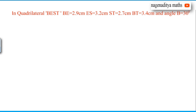The name of the quadrilateral is BEST. BE is equal to 2.9 centimeters, ES is equal to 3.2 centimeters, ST is equal to 2.8 centimeters, BT is equal to 3.4 centimeters, and angle B is equal to 30 degrees.